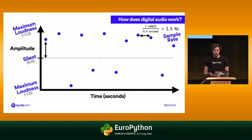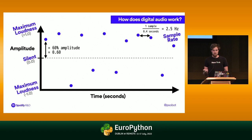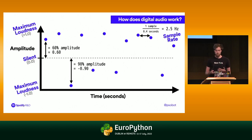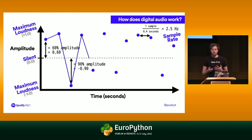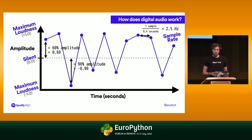We can measure each point here. This point on the left might have 60% amplitude — we can represent that as 0.6 in code. This point here might be 90% amplitude but in the opposite direction, so we'd look at that as negative 0.90. With these points, we can try to reconstruct what that sound was. But unfortunately, we really don't have enough detail — I didn't push the button often enough to reproduce what we just heard and play it back.